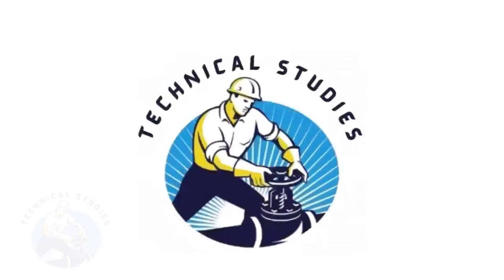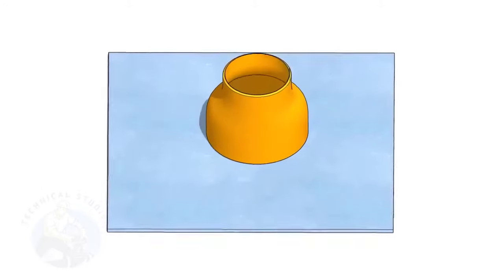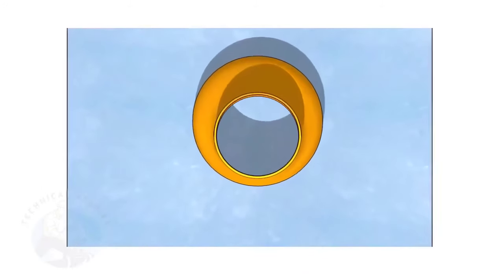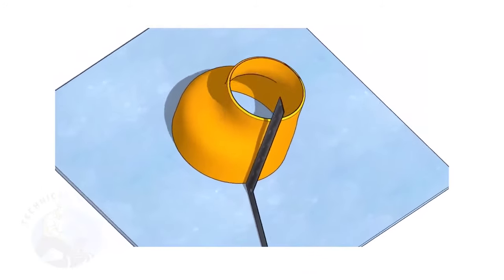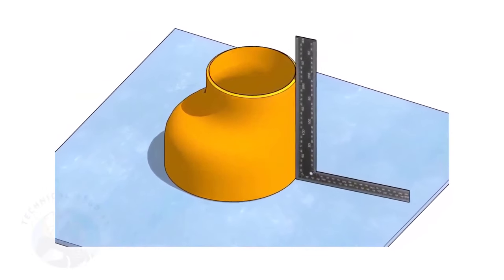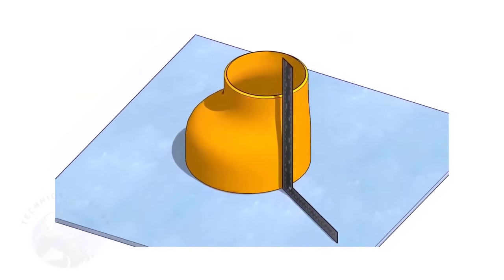Welcome to Technical Studies. Fitting an eccentric reducer to a pipe that is already fitted to another fitting like a flange, tee, elbow, etc. is a little tricky.